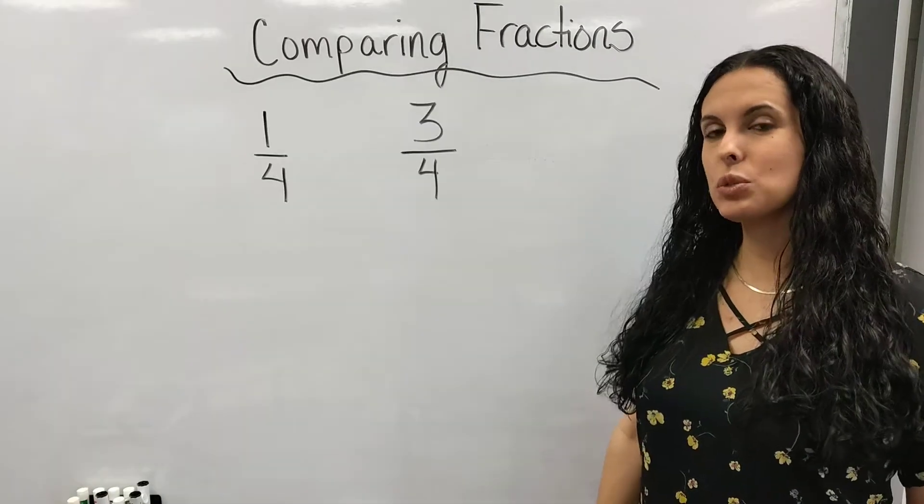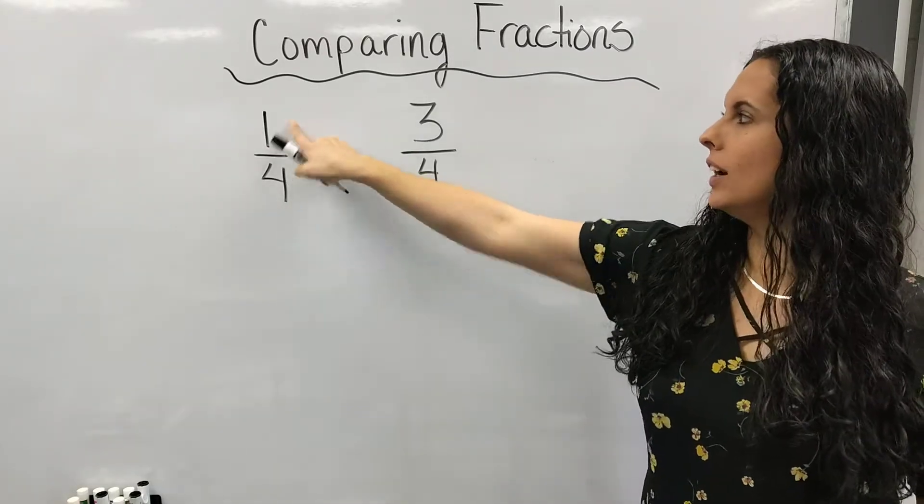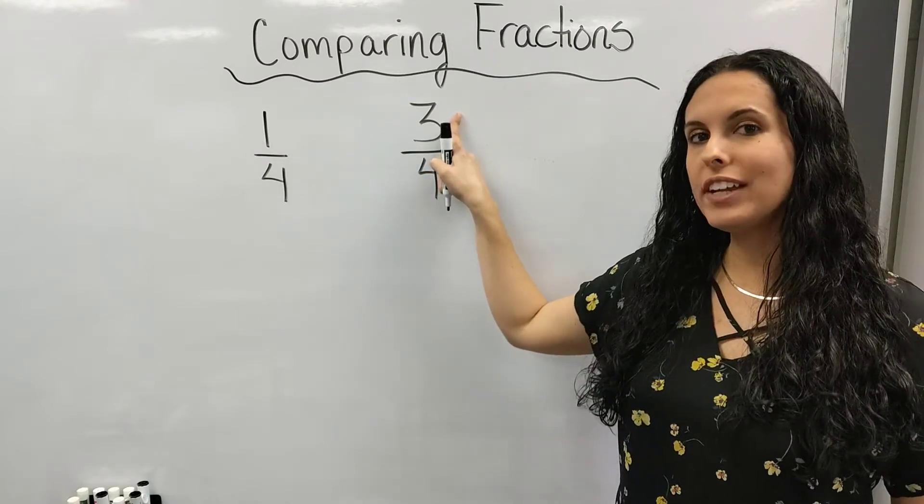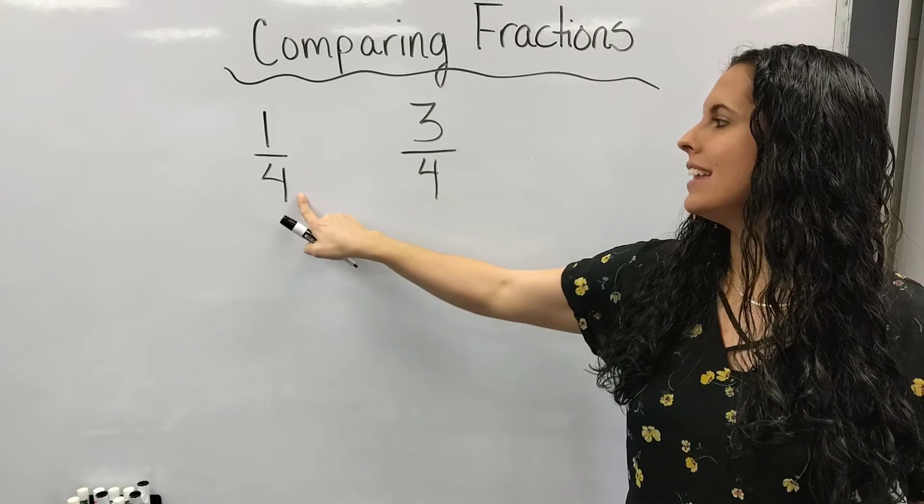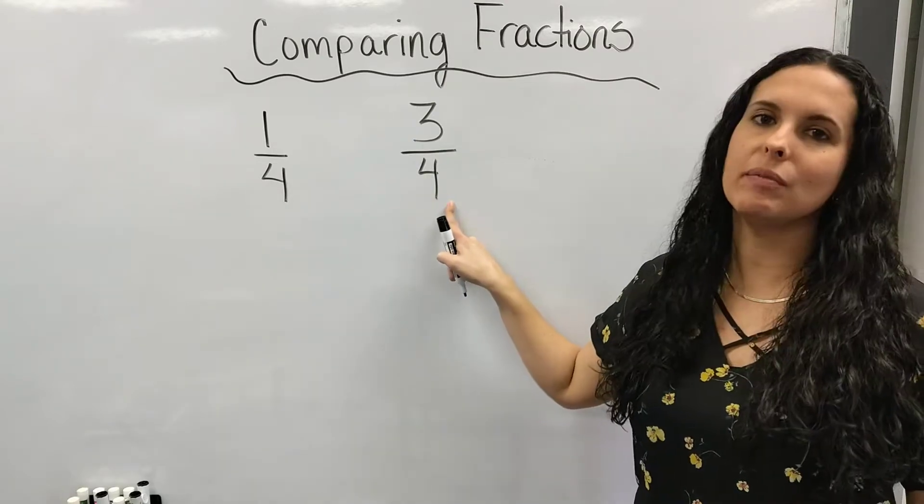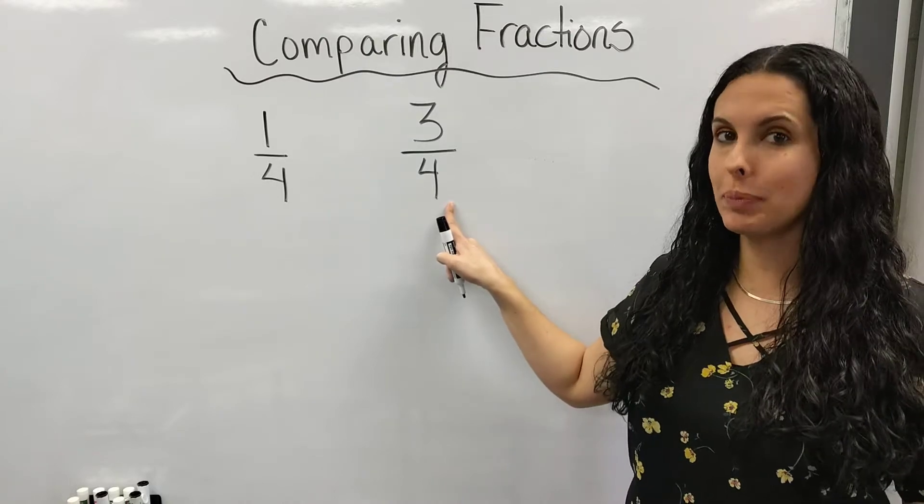The two fractions we're going to compare are one-fourth and three-fourths. The one and the three are your numerators. That's your number that is shaded. Those are your pieces. And then the four at the bottom, that is your denominator. Those are your total pieces.